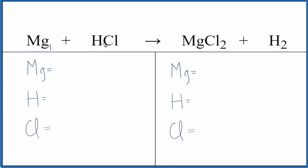We have one magnesium, one hydrogen, and one chlorine atom in the reactants. In the products, we have the one magnesium, two hydrogens, and then the two chlorine atoms.